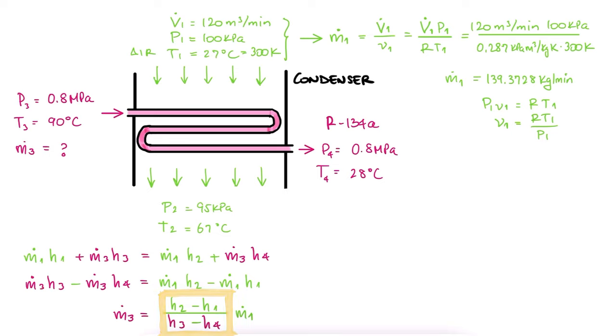As for the enthalpies, from the fact that the word condenser was used to describe this heat exchanger, we can assume that the refrigerant is coming as superheated and leaving as a compressed liquid.